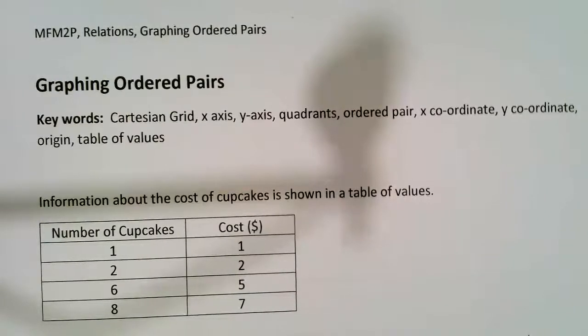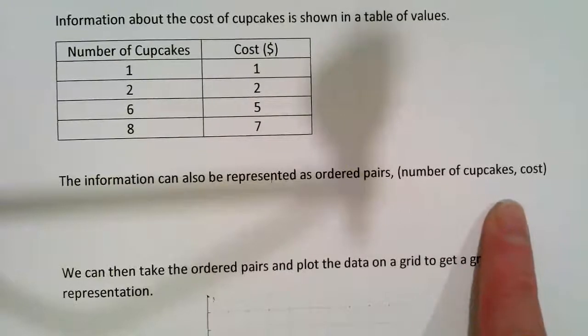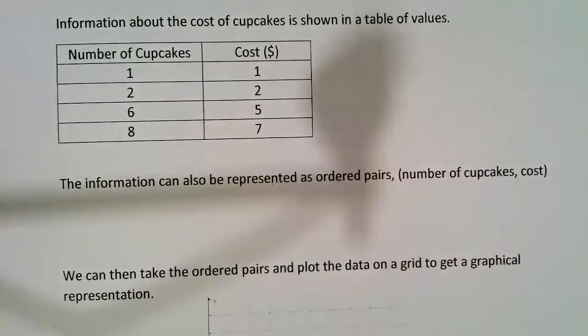But the information can also be presented as ordered pairs, and it's going to look like this. It's going to take on the form of a number, a comma, and another number inside brackets.